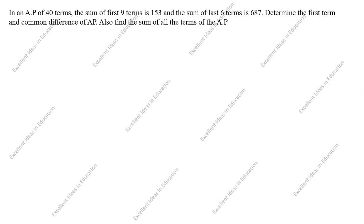Hi students, welcome to my channel Excellent Ideas in Education. Today we are going to solve this arithmetic progression problem. This is a board exam problem: in an AP of 40 terms, the sum of first nine terms is 153 and the sum of last six terms is 687.